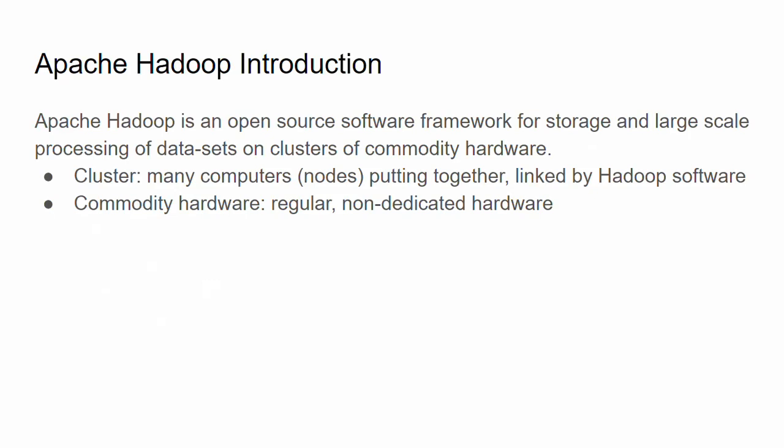Currently in the data engineering world, the most important distributed system is Apache Hadoop. Apache Hadoop is an open source software framework for storage and large-scale processing of data sets on clusters of commodity hardware. Commodity hardware means regular, non-dedicated hardware, as opposed to high-end specialized servers from vendors like Teradata or Oracle, which are specialized for intensive data processing. Hadoop builds a cluster of many nodes linked by Hadoop software, utilizing all the nodes to calculate.